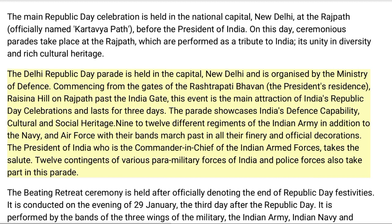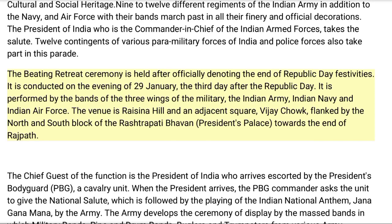Twelve contingents of various paramilitary forces of India and police forces also take part in this parade. The Beating Retreat ceremony is held after officially denoting the end of Republic Day festivities. It is conducted on the evening of 29 January, the third day after Republic Day. It is performed by the bands of the three wings of the military — the Indian Army, Indian Navy, and Indian Air Force. The venue is Raisina Hill in the adjacent square, Vijay Chowk, flanked by the north and south block of the Rashtrapati Bhavan towards the end of Rajpath.